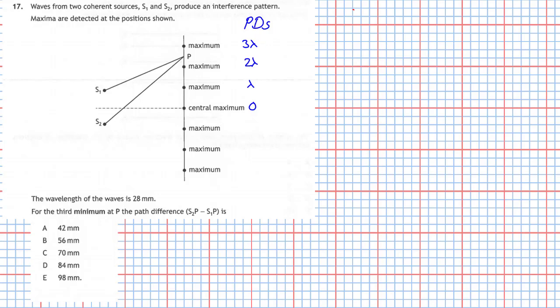Now what about the minimums, which I'll do in red here. A minimum occurs here. That's the first minimum. Now the first minimum is going to occur when the path difference between S1 P and S2 P is half a wavelength. The second minimum will occur when the path difference is 1.5 wavelengths, and the third minimum, which we're looking for, will occur when the path difference is 2.5 wavelengths. Now that's a pattern we have to remember.